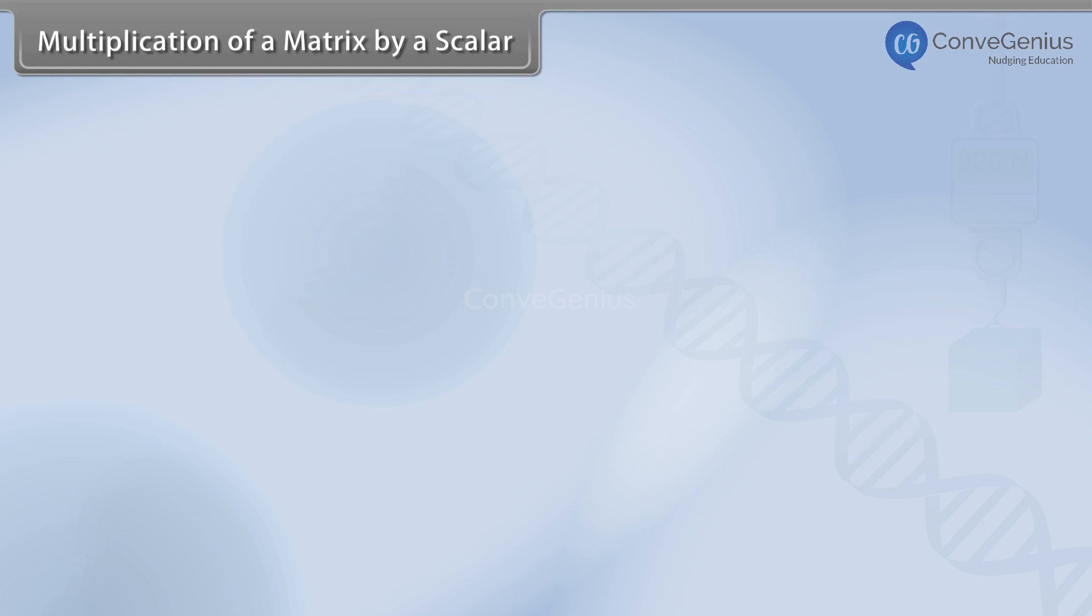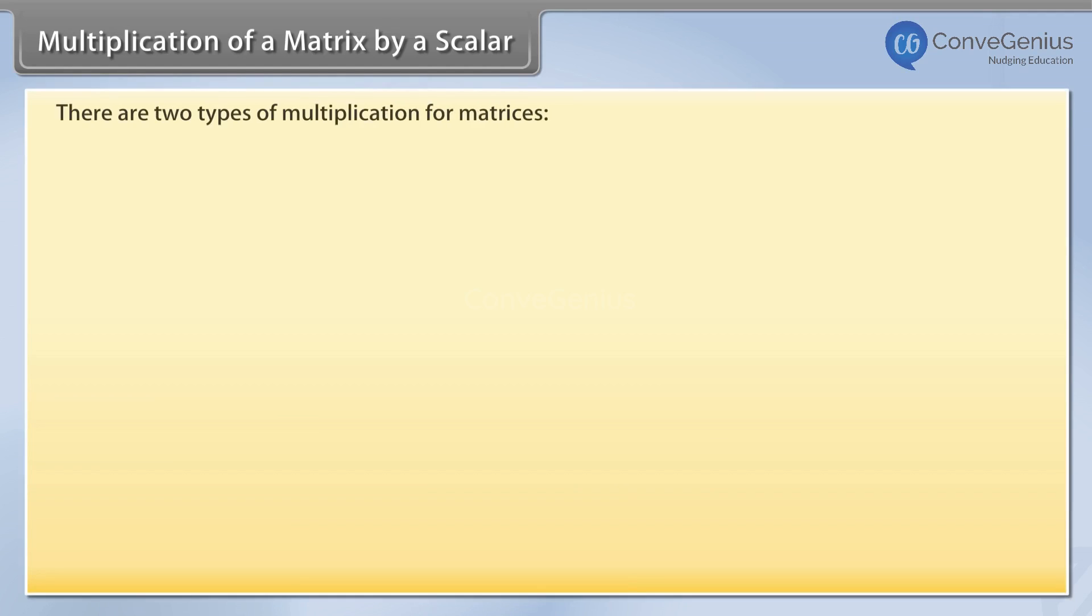Multiplication of a matrix by a scalar. There are two types of multiplication for matrices: scalar multiplication and matrix multiplication.